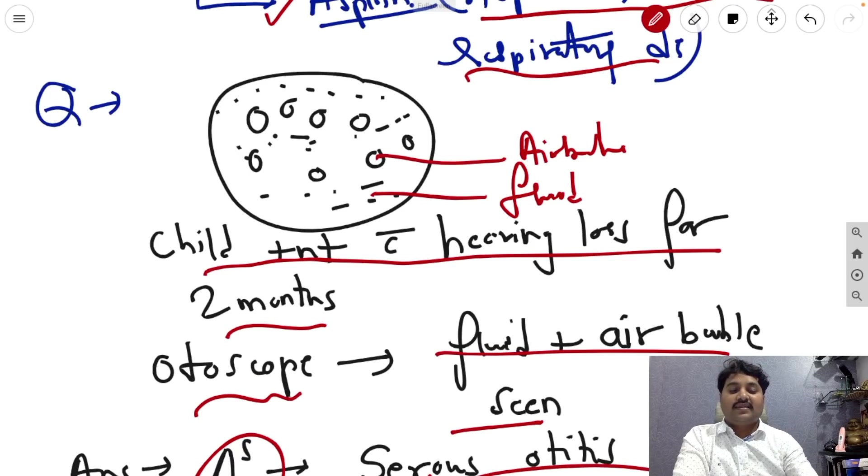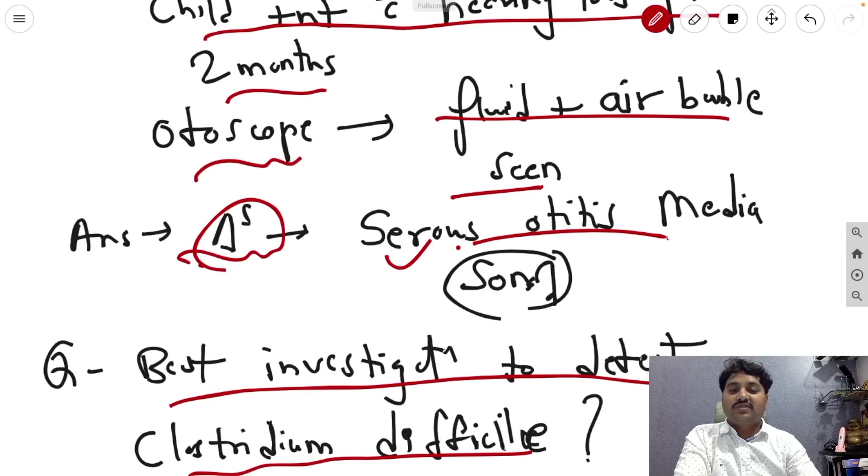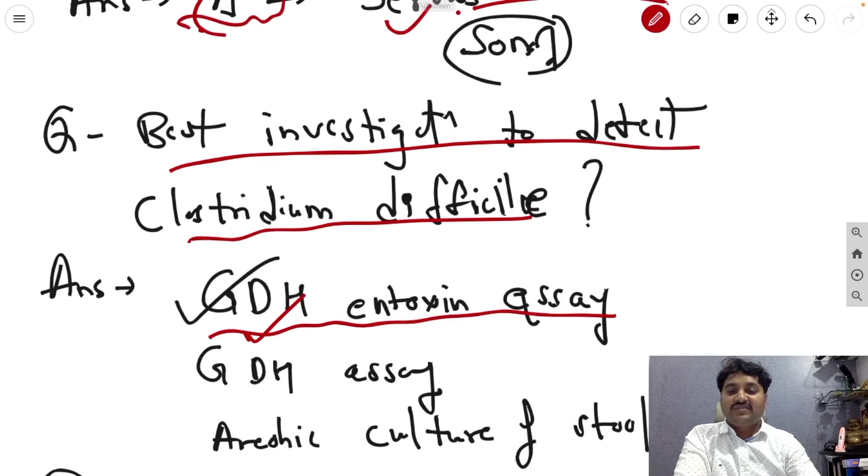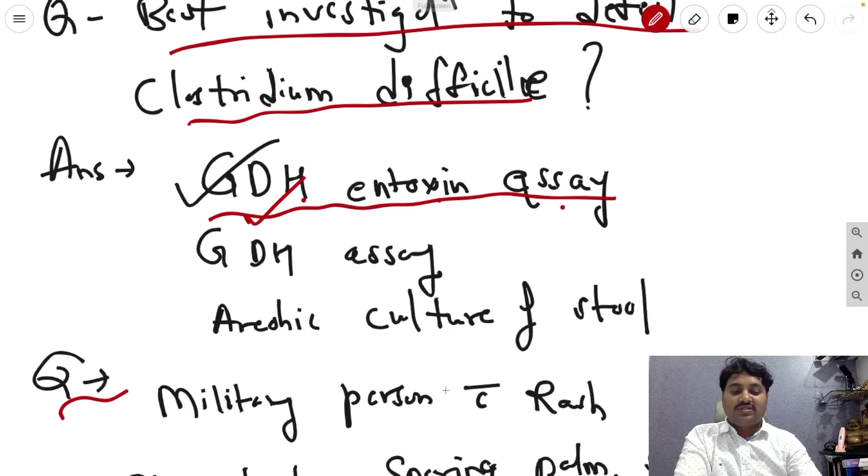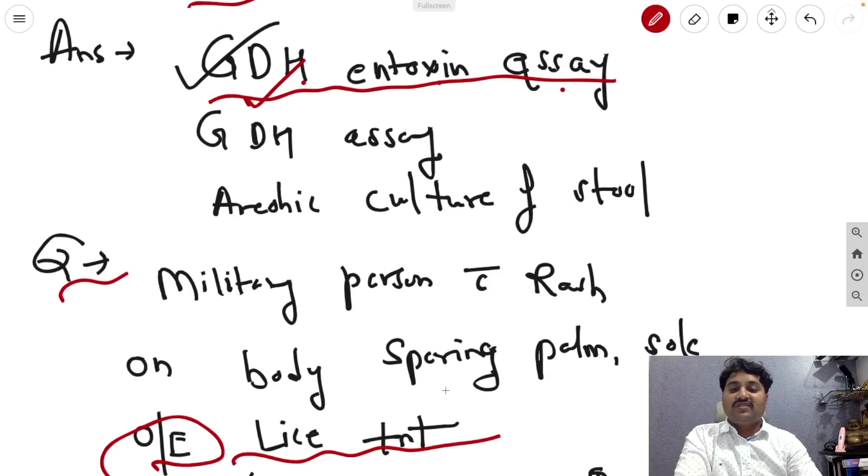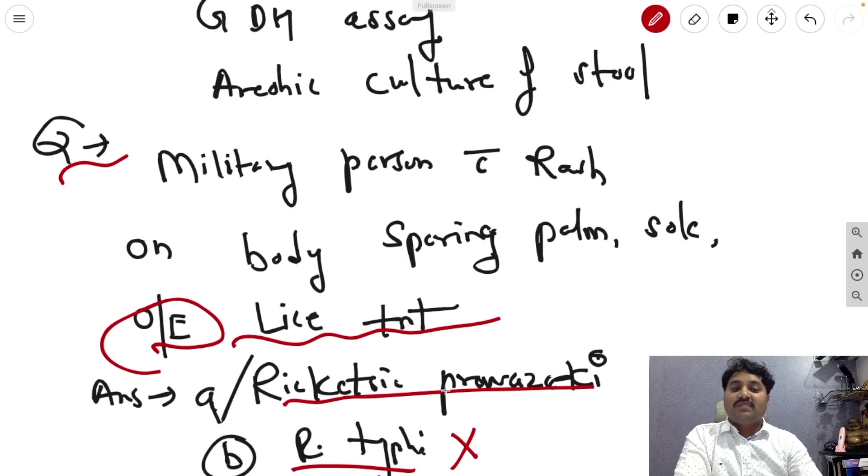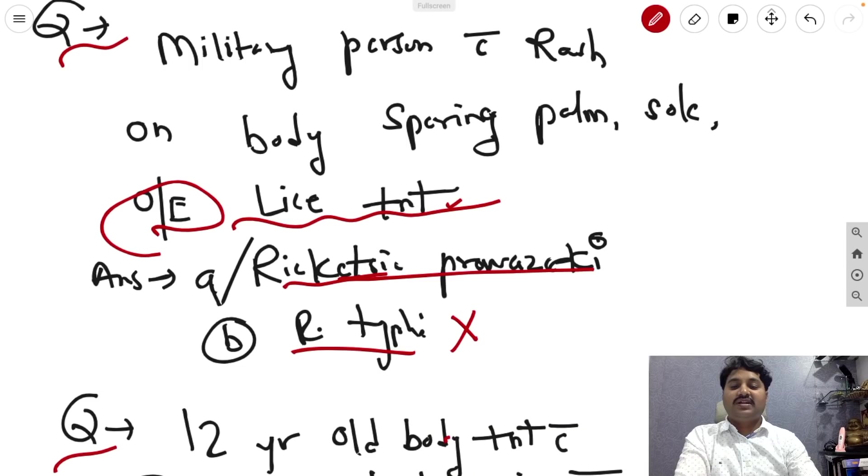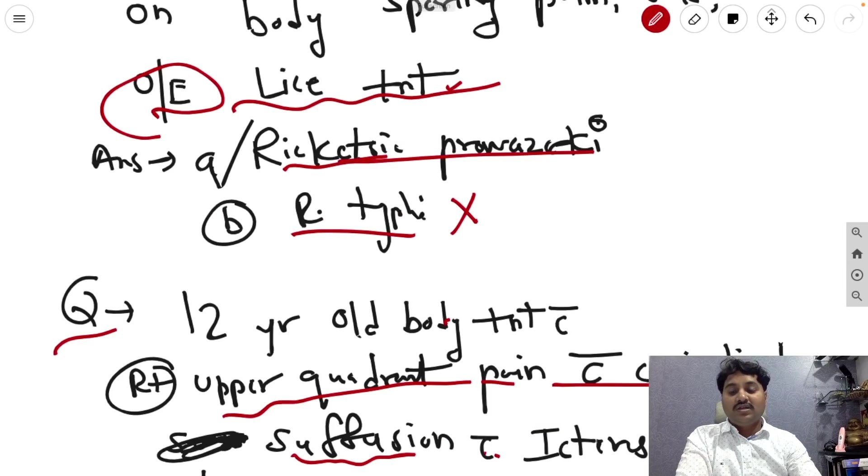Best investigation to detect Clostridium difficile, the answer is the GDH and toxin assay, not the GDH assay. Next question, military person with a rash on the body sparing the palm and sole. On examination, eschars present. Answer is Rickettsia prowazekii, not Rickettsia typhi.